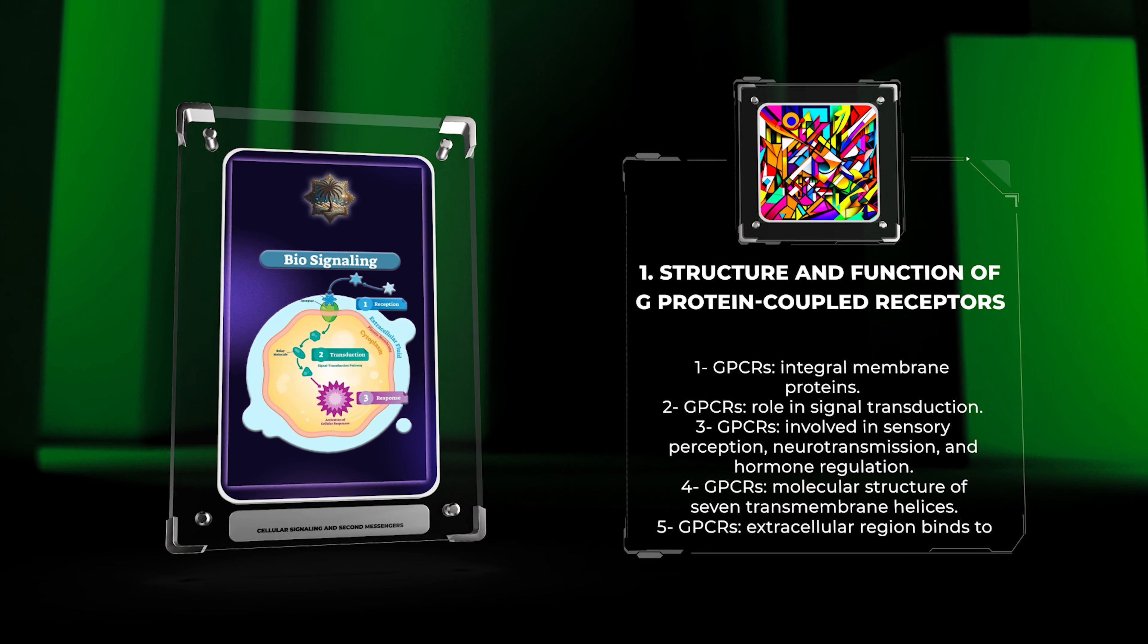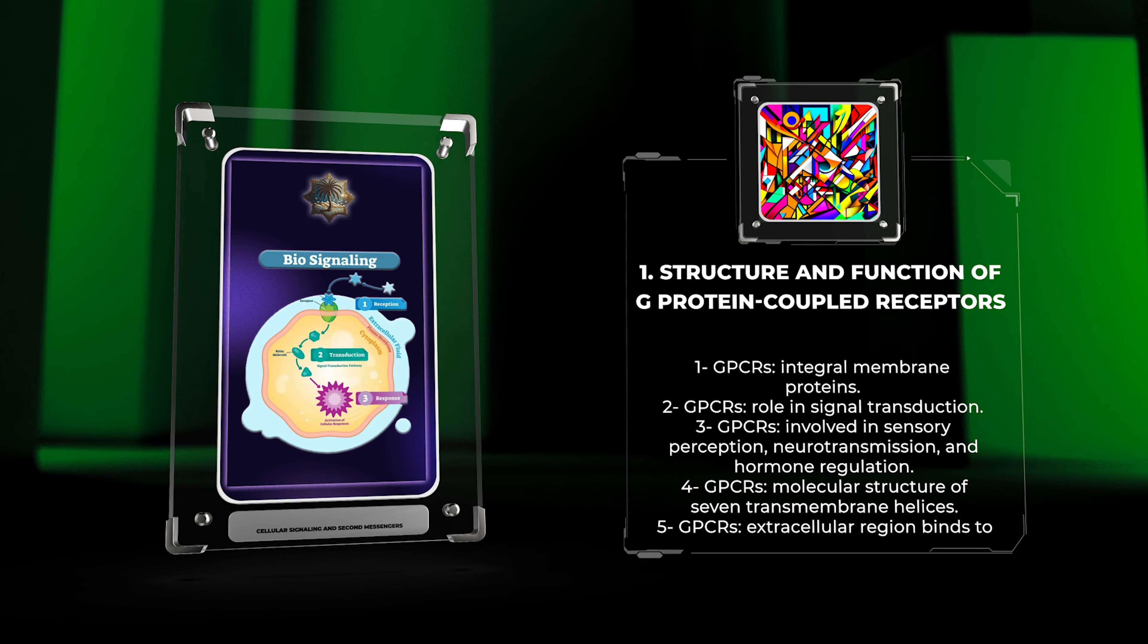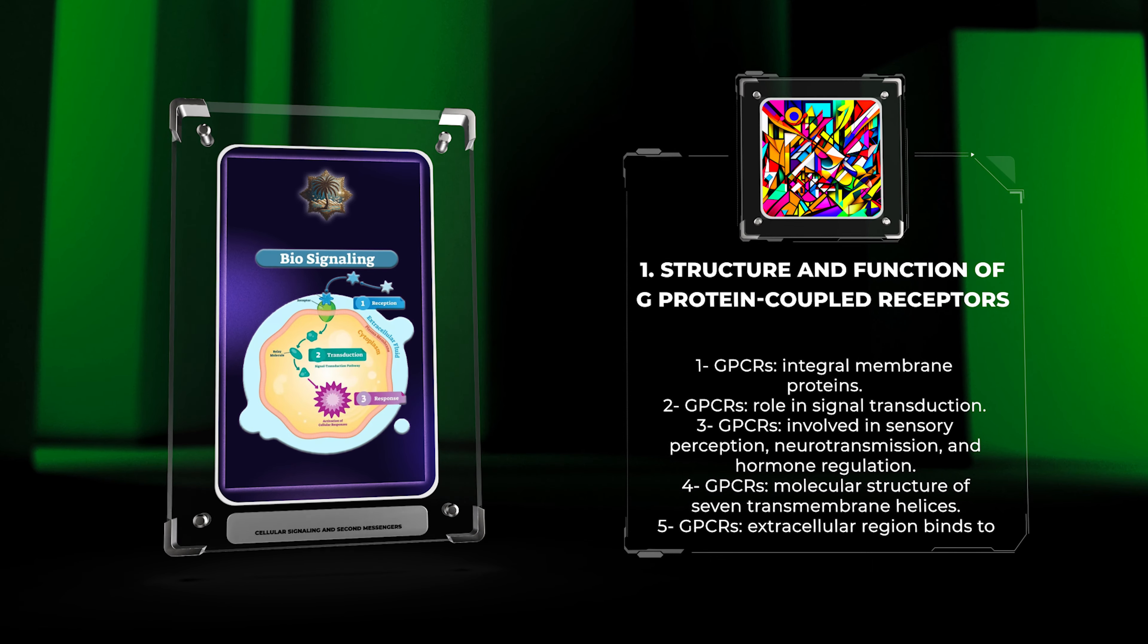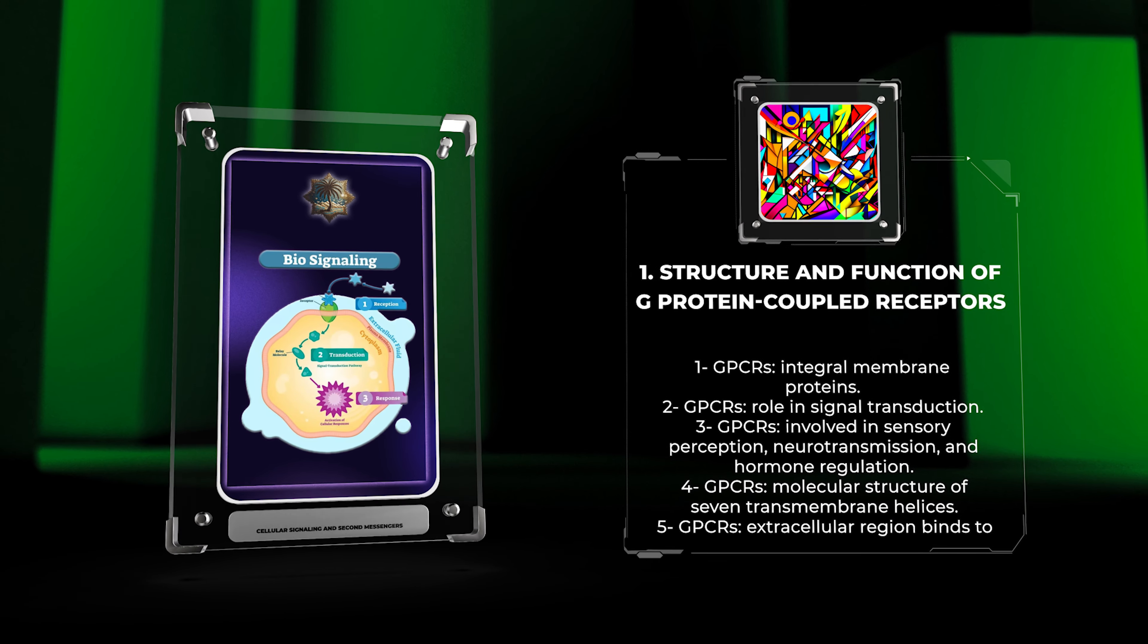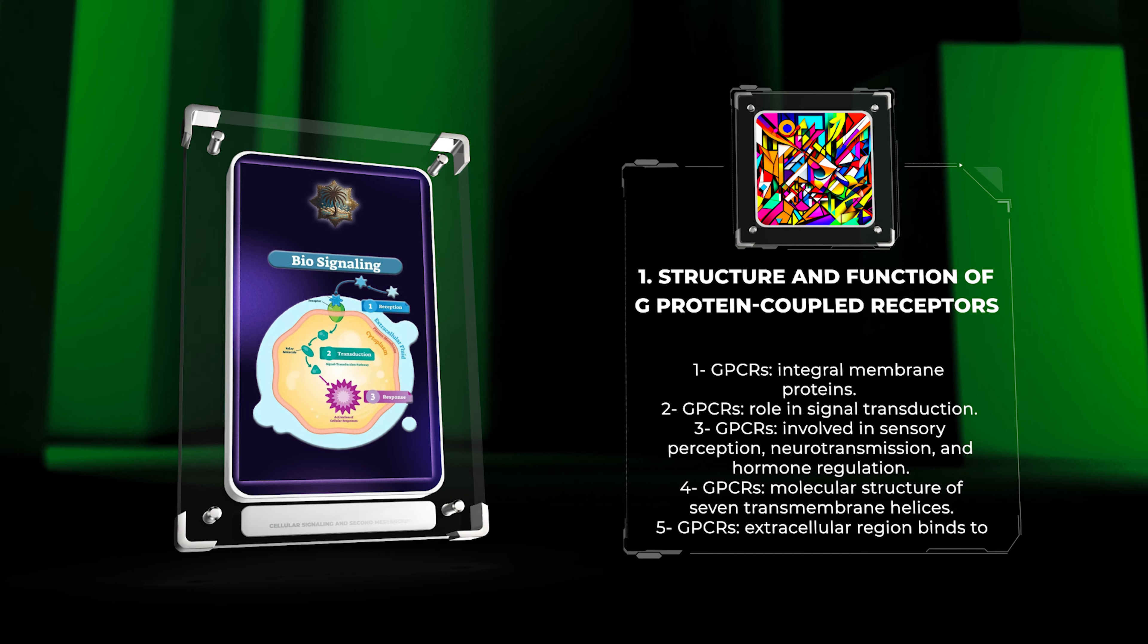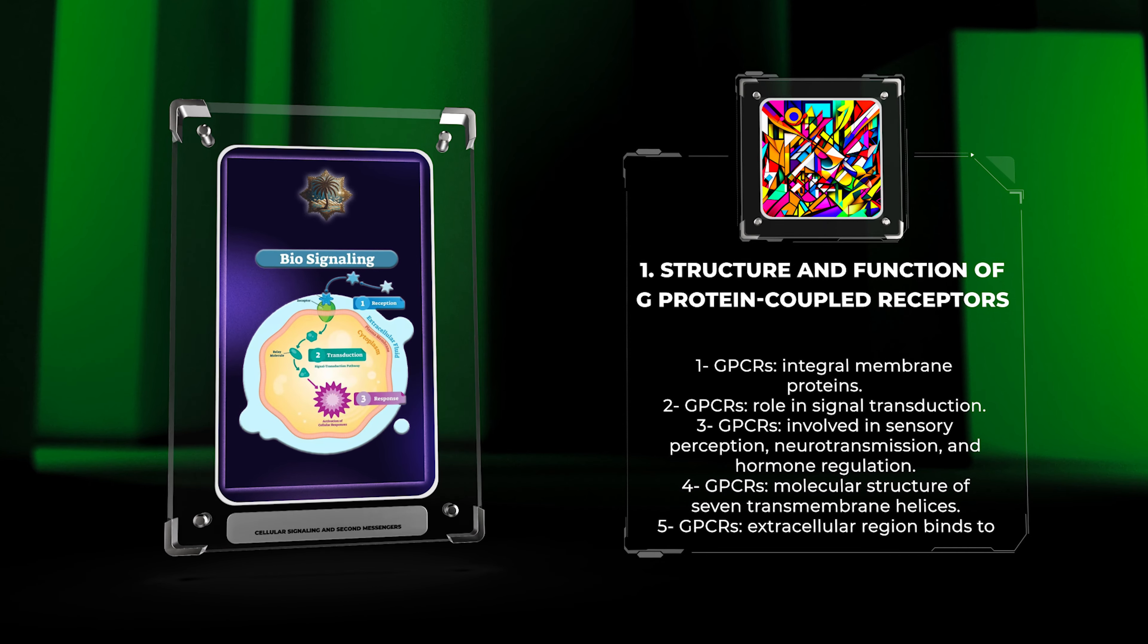At the molecular level, GPCRs consist of seven transmembrane helices connected by extracellular and intracellular loops. The extracellular region of the receptor binds to specific ligands, such as neurotransmitters or hormones, while the intracellular region interacts with G-proteins, initiating downstream signaling cascades.